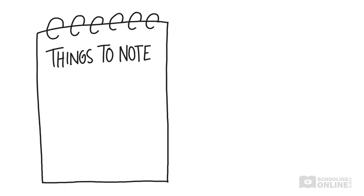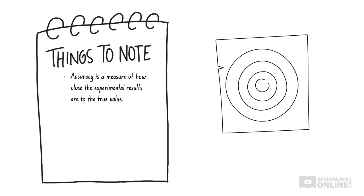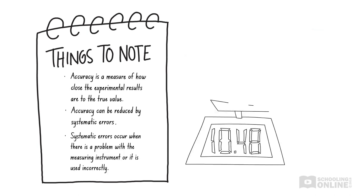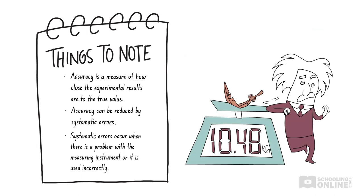Let's quickly revise what we've learned so far. Accuracy is a measure of how close the experimental results are to the true value. Accuracy can be reduced by systematic errors, where there is a repeated error in the same direction. Systematic errors occur when there is a problem with the measuring instrument, or if we are using the instrument incorrectly.